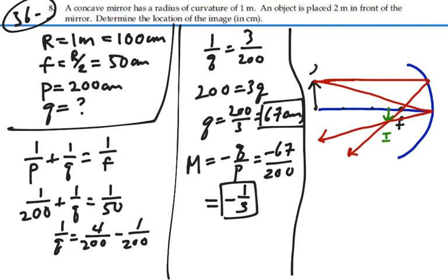Here's our object, and we can see that the image is inverted. It's probably about one-third the size of the object, and the image distance is positive — it's on the same side as the outgoing rays. It's located just beyond the focal point, which is where this appears to be. So this looks like a good diagram and a good result. Image distance: 67 centimeters.